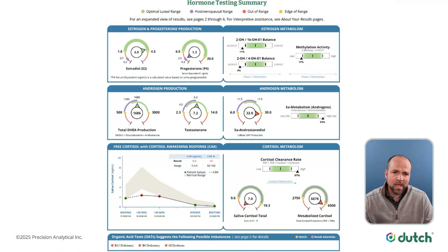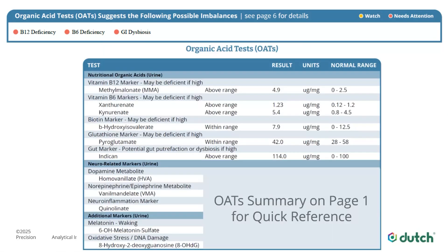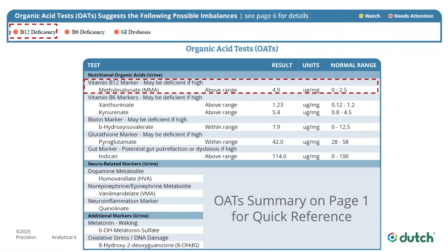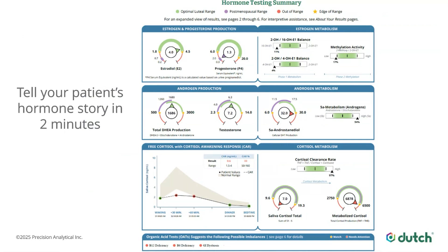Once you're oriented to this new format, you'll be able to return to the front page and efficiently tell that story. We've also added a cheat sheet at the bottom for the organic acid panel, so before you even get to page two, you already know that when you get to page six and look at the organic acids, you're going to have a B12 issue, a B6 issue, and the gut marker indican that is elevated — which ties in nicely with the overall story. This gives you the ability to tell a two-minute overview of the patient's hormones right from the front page.